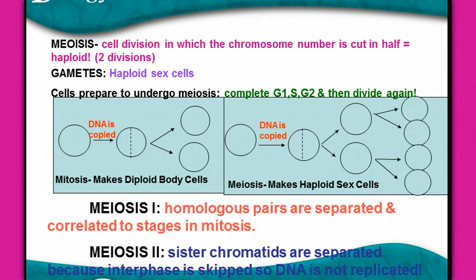At the top of your page, if you're going to write anything for meiosis, write down: the number is cut in half, equals haploid. Gametes are the haploid sex cells — in males, sperm, and in females, egg.